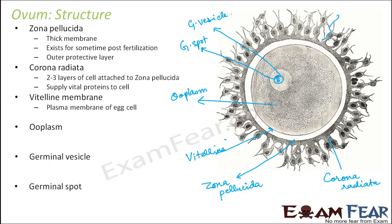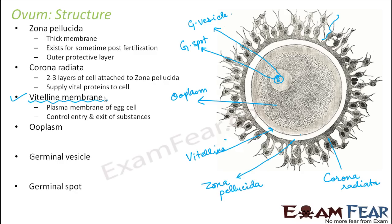The vitelline membrane is nothing but the plasma membrane of the egg cell. Every cell has a plasma membrane, and so does the ovum — but here it is given the name vitelline membrane. Its purpose is the same: it controls the entry and exit of substances, allowing only specific substances to pass through.